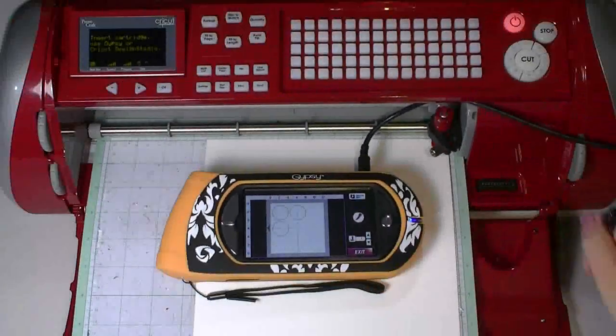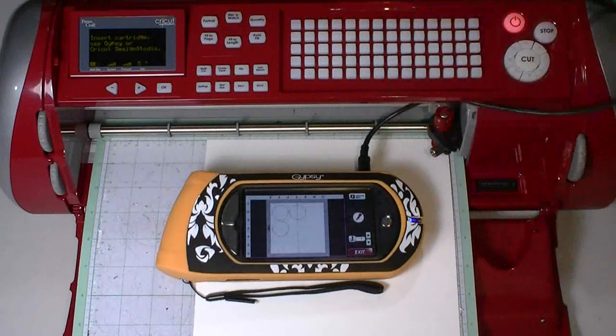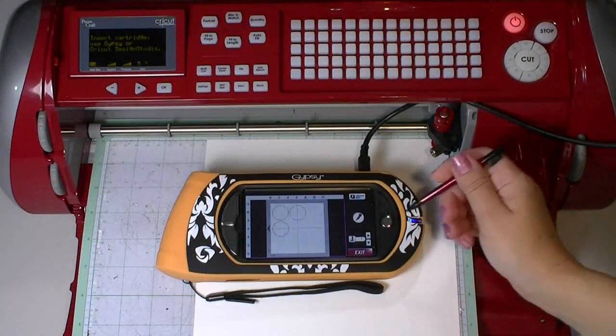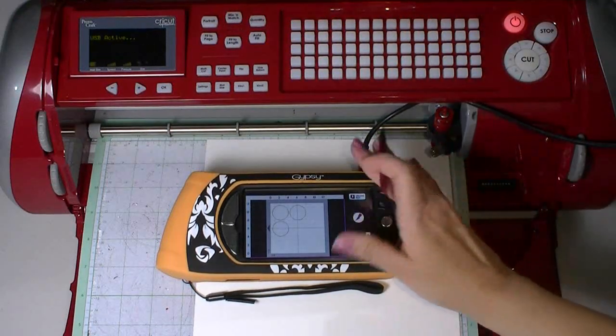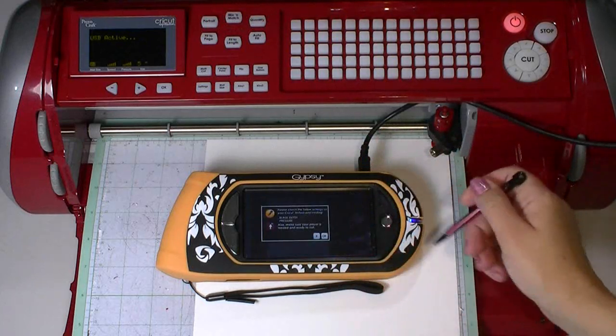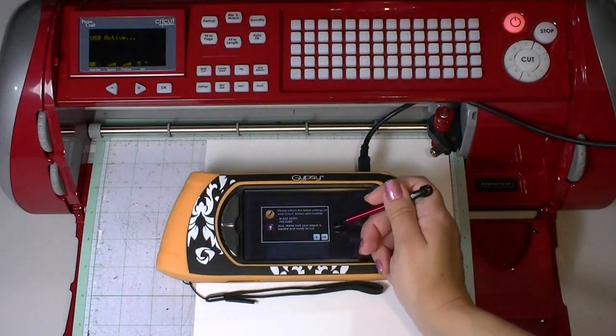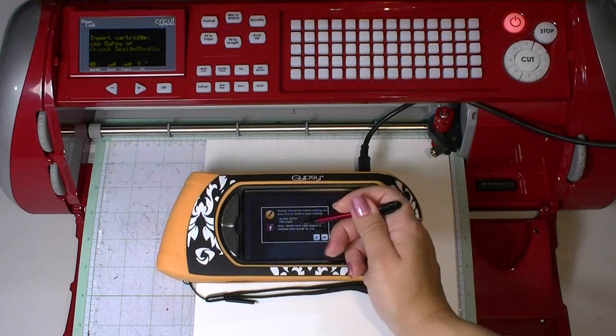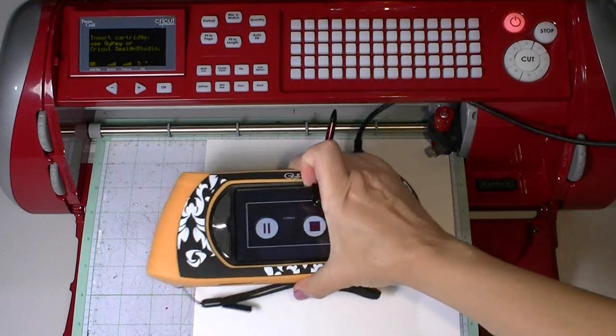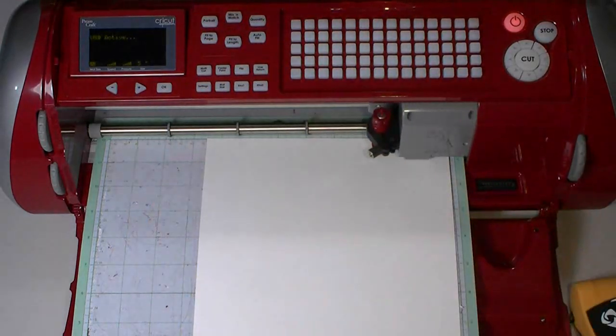You can see the Gypsy's hooked into the back of the Expression. What I need to do now is press the cut button. Don't worry, it's not going to cut my Gypsy. I'm not ready yet. I still have to go through this and press OK that the blade depth and the pressure are fine. So we'll do that. Now it's going to cut.